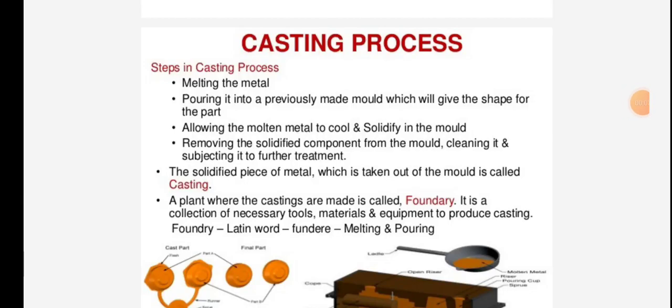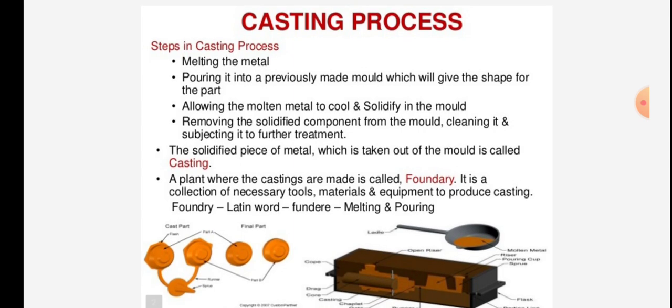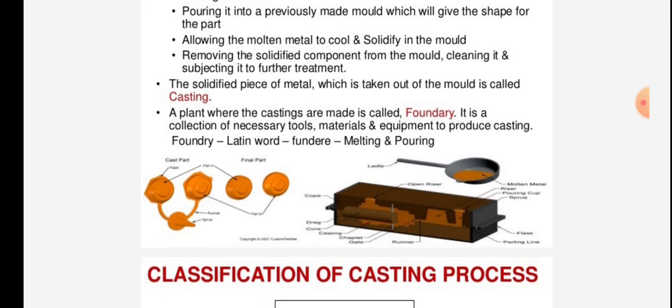Welcome back. We will now see the subject manufacturing process, specifically the subtopic casting processes. The steps in casting process are: melting the metal, pouring it into a previously made mold which gives shape to the part, allowing the molten metal to cool and solidify in the mold, removing the solidified component from the mold, cleaning it and subjecting it to further treatment. The solidified piece of metal taken out of the mold is called a casting.